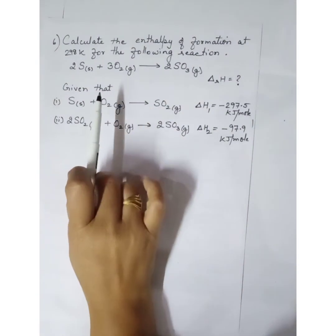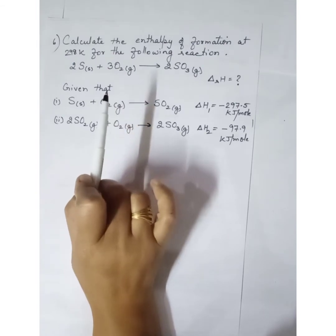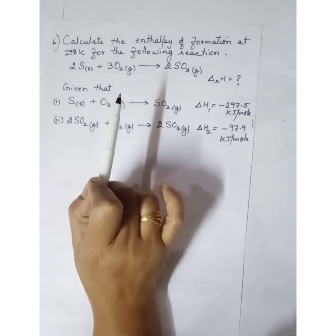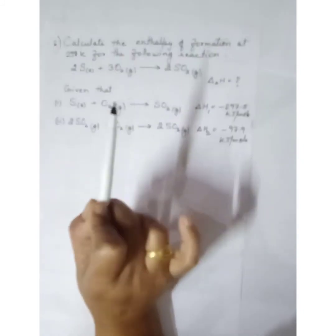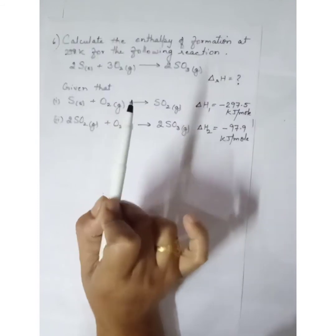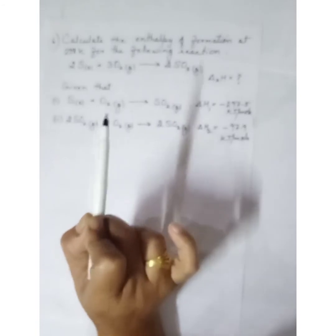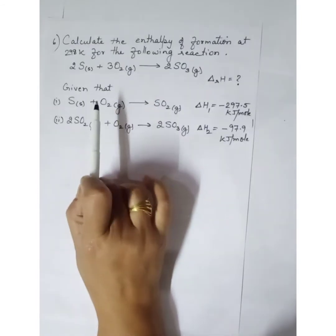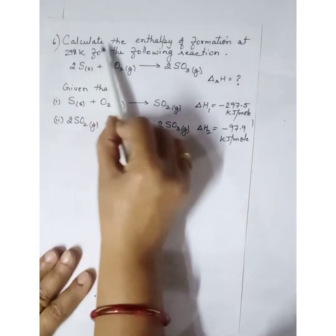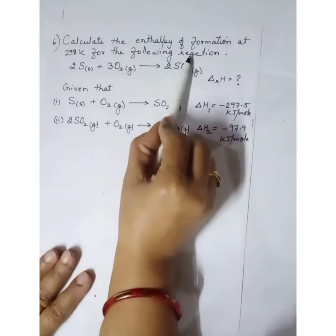The next numerical is based on Hess's law of constant heat of summation. According to Hess's law, if a reaction takes place in several steps, then its standard enthalpy of reaction equals the sum of standard enthalpies of all the intermediate steps. Calculate the enthalpy of formation at 298 Kelvin for the reaction: 2S plus 3O2 gives 2SO3 gas.